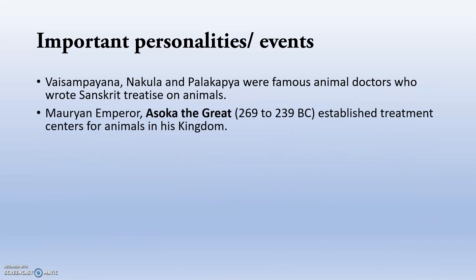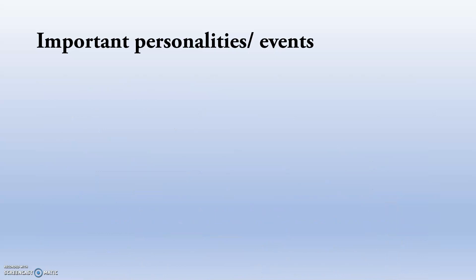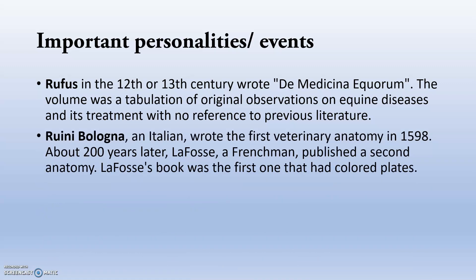Vaisampayana, Nakula, and Palakapya were famous animal doctors who wrote Sanskrit treatises on animals. The Mauryan emperor Ashoka the Great established animal treatment centers in his kingdom. Galen and Hippiatrica — Roffers in the 12th and 13th century wrote 'Di Medicina e Choram.' Ruini Bologna, an Italian, wrote the first veterinary anatomy in 1598.